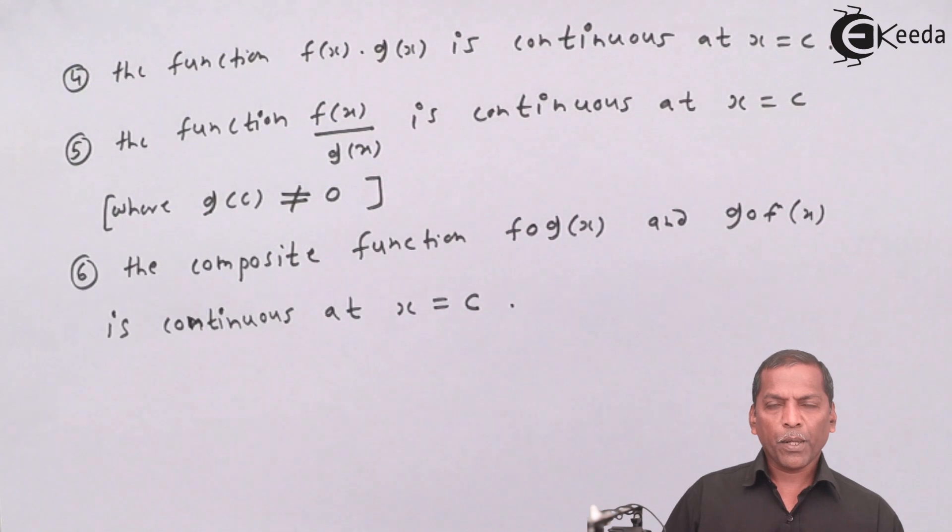That is, composite of continuous function is also continuous. So this gives totally 6 conditions under which the given function is continuous and this is called algebra of continuous function. By using these 6 conditions, we can solve many problems of continuity as possible.